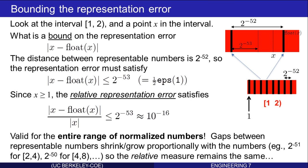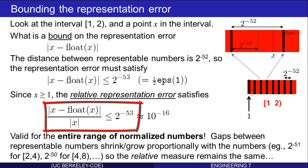What's interesting is that although we derived this bound for the interval 1 to 2, it's actually valid for the entire range of normalized numbers. Why? Remember that the gaps between representable numbers shrink and grow proportionally with the numbers. The gap is 2 to the negative 52 in the interval 1 to 2, but it's 2 to the negative 51 in the interval 2 to 4, 2 to the negative 50 in the interval 4 to 8, and so on. So the relative measure remains the same for all intervals. The distance between a real number and its closest representable number, normalized by the real number, is always less than or equal to one half eps(1).